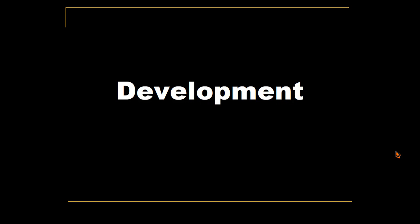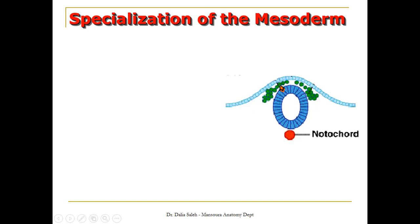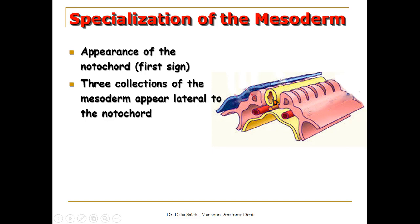For the development of the vertebral column, first we should learn about the specialization of the mesoderm. Looking at a cross-section of the embryo, we have here the notochord, overlying it lies the neural tube. From a previous presentation, we noted that the notochord induces the overlying ectoderm to form the neural tube. The surface ectoderm and neural crest cells are also visible. The first sign of specialization of the mesoderm is the appearance of the notochord, which is part of the mesoderm.